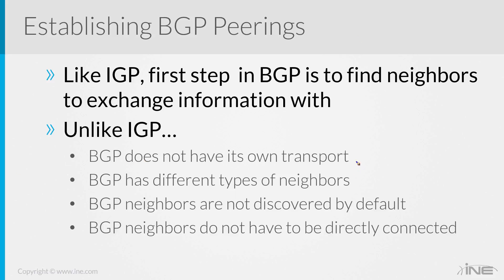It does not have its own transport. BGP uses TCP port 179 for transport. Basically, what that means is if you don't have a way of reaching the other end, it's not going to be able to form a TCP peering. I'm going to go into more detail on this in the upcoming slide, so I'm not going to dig too deep into this.